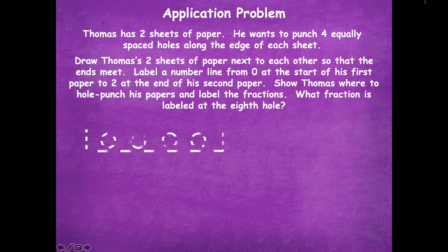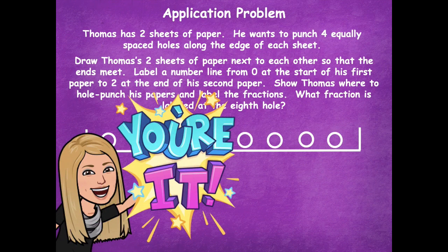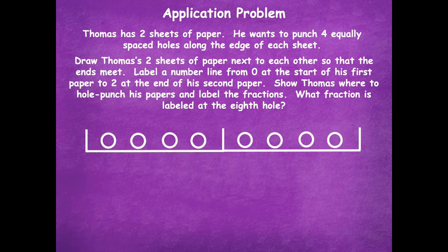Let's talk about this problem before we get started. Think about you take your paper and turn it on its side, and you want to put in four equally spaced holes along each side. Here are my two sheets of paper, and notice how in the middle I had them touch each other because you're lining them right up together. Now you're going to draw your number line starting with zero, label your fractions, and then find out which fraction is on the eighth hole — like one, two, three, and so on until you get to that eighth hole. Pause the video, draw the paper, draw your number line with the fractions, find out which fraction is at the eighth hole, and click play when you're ready to go over it together.